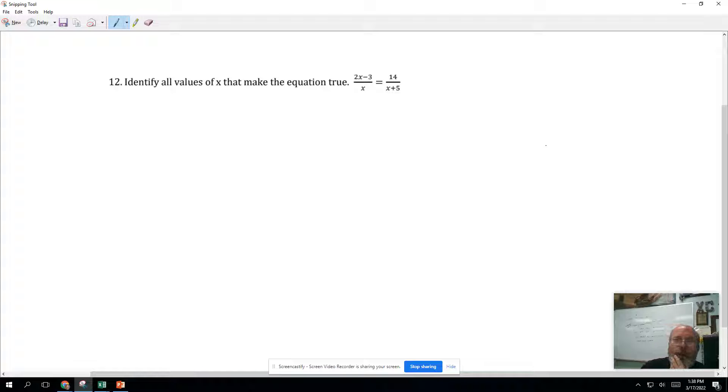We're going to multiply both sides of the equation by both denominators again. X is the denominator, and X plus 5 is the denominator.